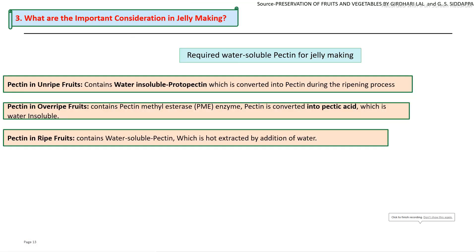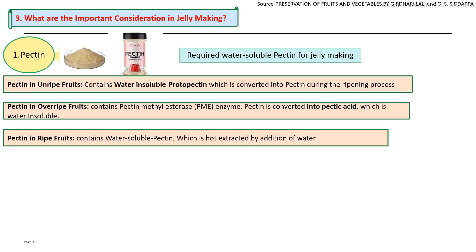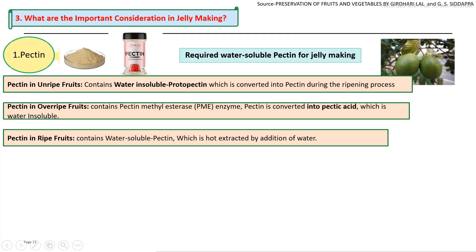Pectin is a carbohydrate substance extracted from fruits. The initial pectin level is very important, and additional pectin may be required. Regarding fruit ripeness: unripe fruits contain protopectin, which is insoluble in water and not suitable for jelly manufacturing.